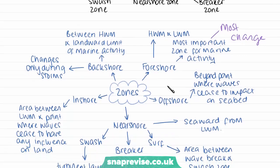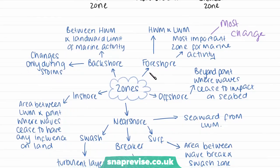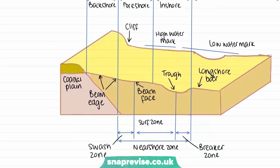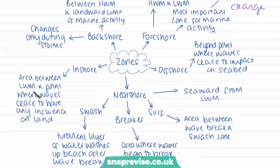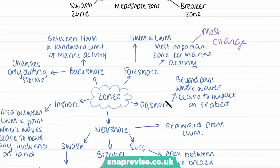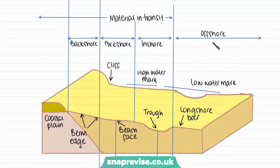Then we have our inshore section, which is even further towards the sea than the foreshore. The inshore section is the area between the low water mark and the point where the waves cease to have any influence on the land — almost between the offshore zone and the foreshore. The furthest extent is our offshore zone, which is beyond the point where waves would cease to have an impact on the seabed. Activity here is pretty much limited to the deposition of sediments, and it is furthest away from land of all the zones.